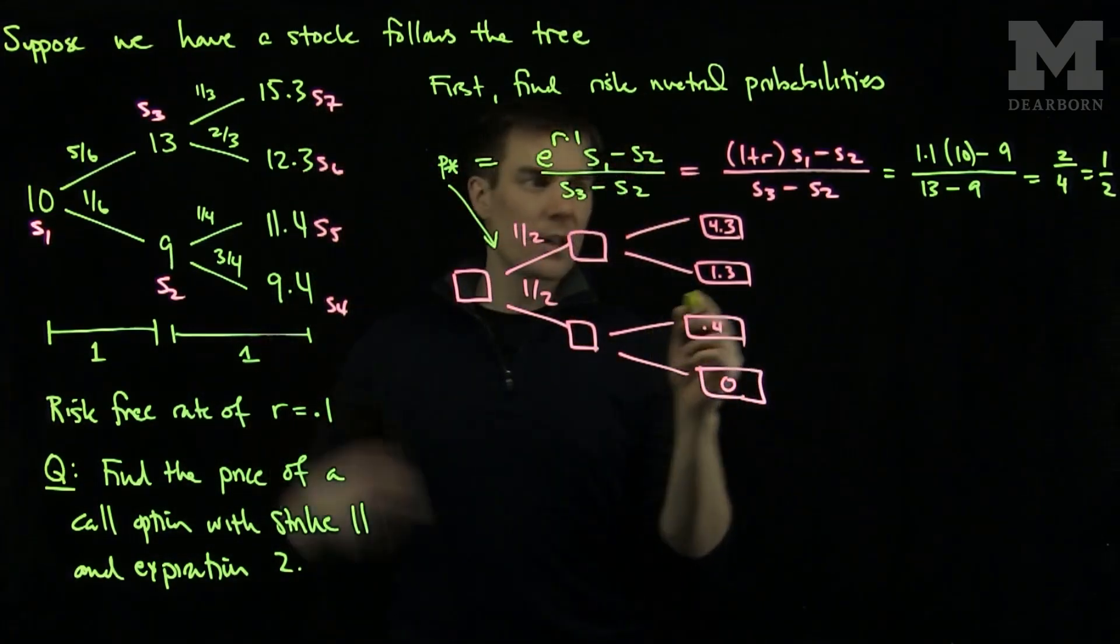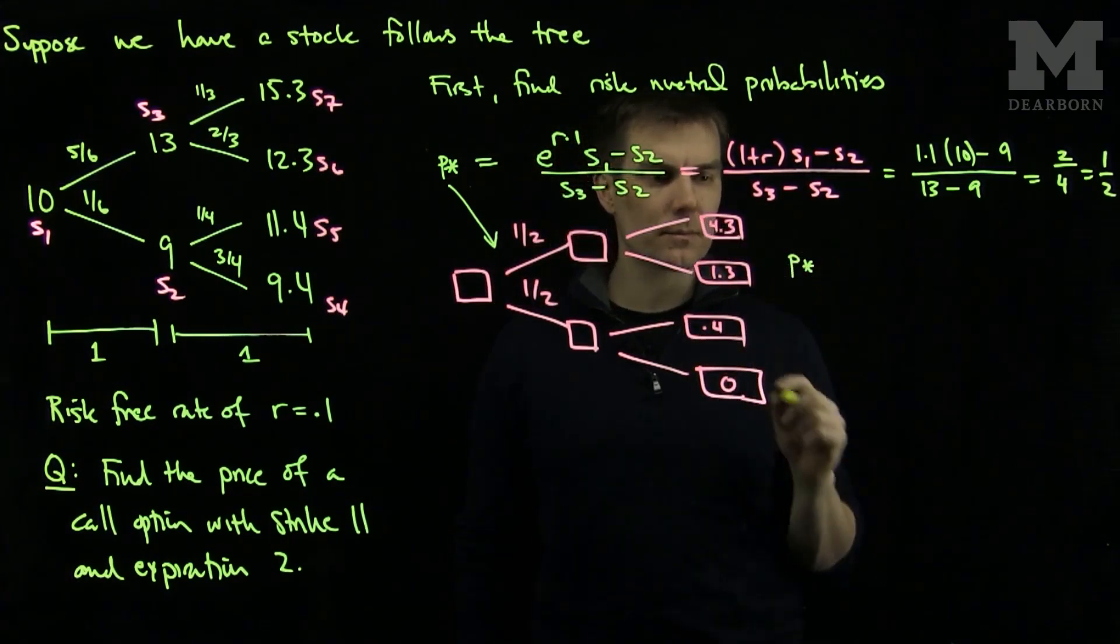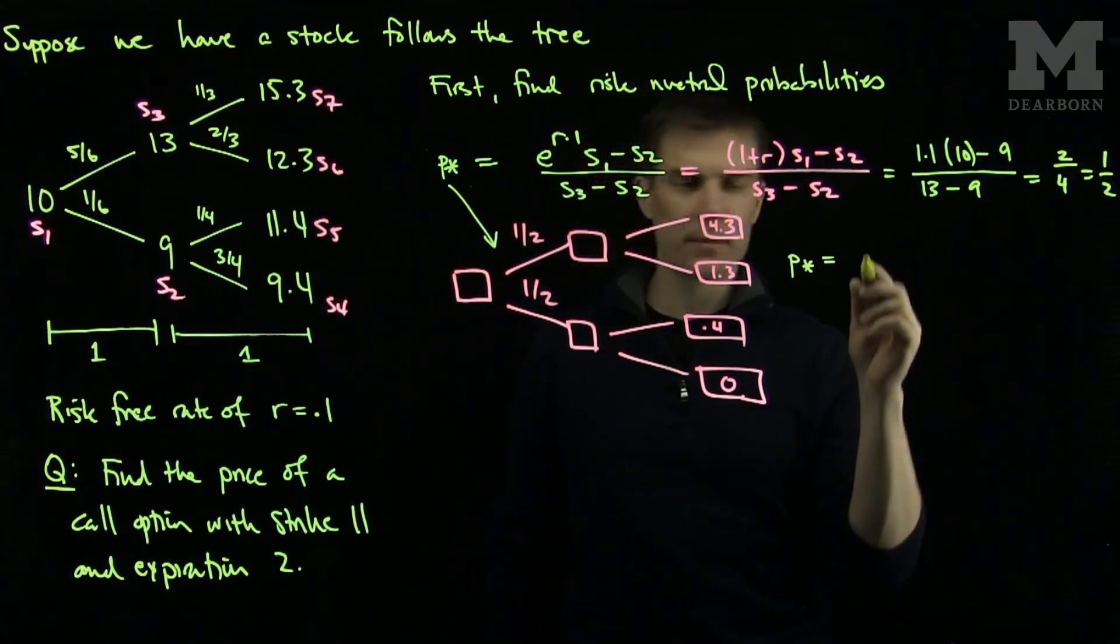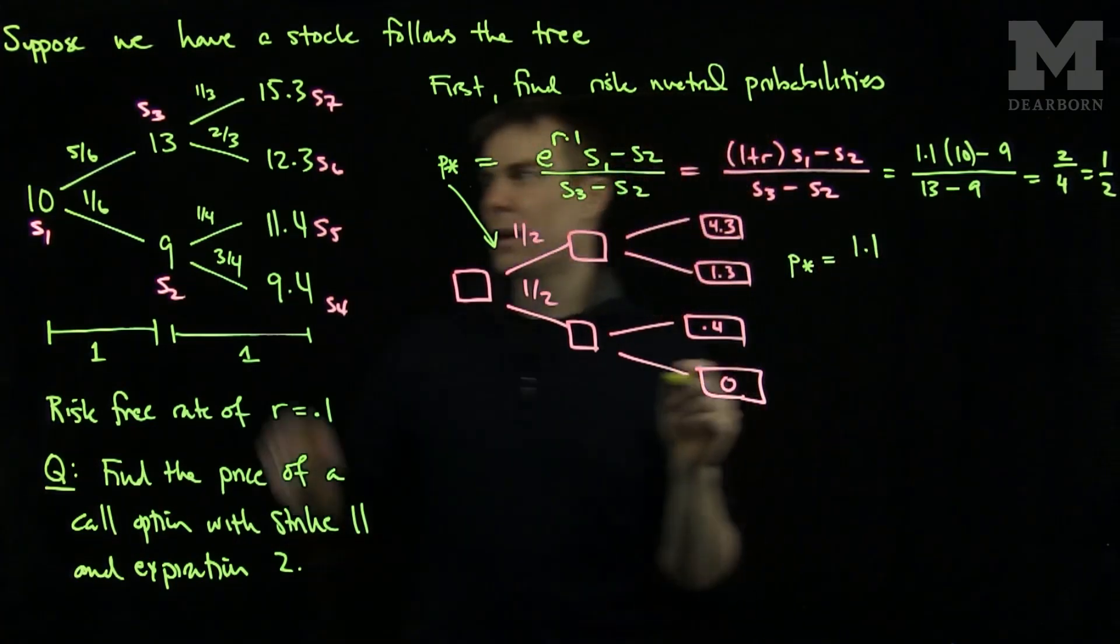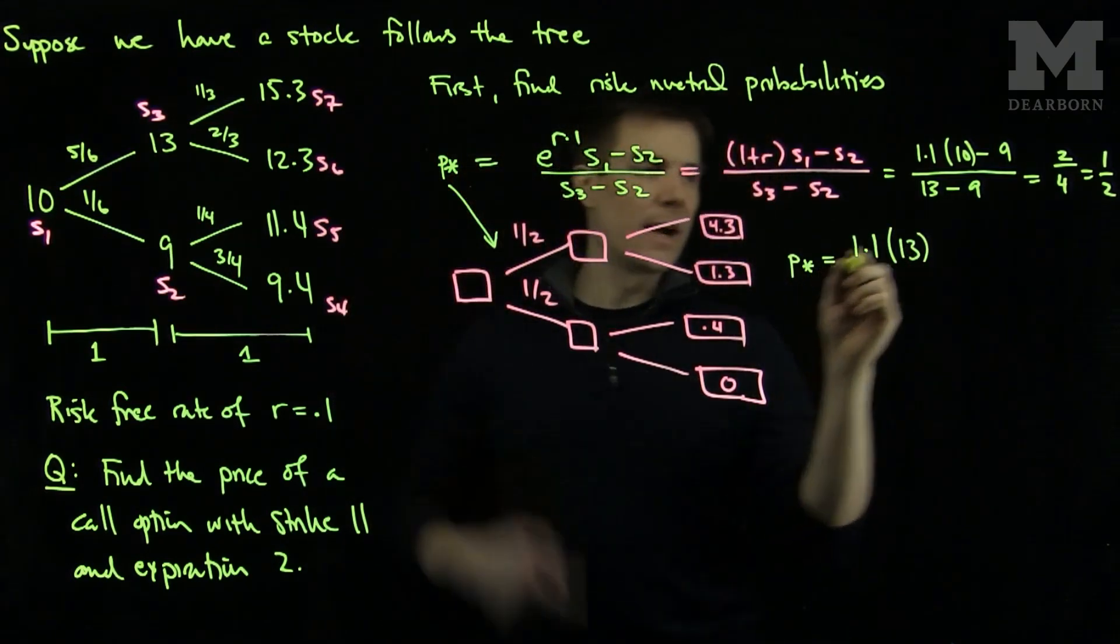Now the P star that corresponds to the next branch, this top branch over here, will be P star. And that will be 1.1 times 13 minus the down, and the down is going to be 12.3